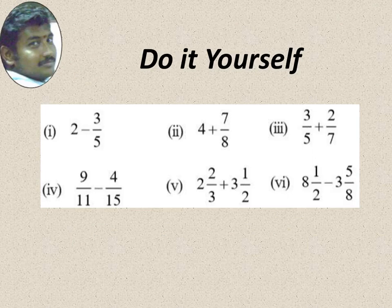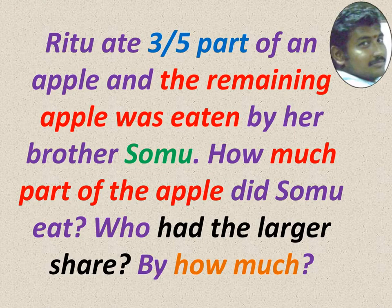So here are few sums for you. You can do it yourself. 2 minus 3 by 5. 4 plus 7 by 8. 3 by 5 plus 2 by 7. 9 by 11 minus 4 by 15. 2 2 by 3 plus 3 1 by 2. 8 1 by 2 minus 3 1 by 5. One more word problem for you. All these sums, first you have to make it into like fraction, then you can add or subtract.